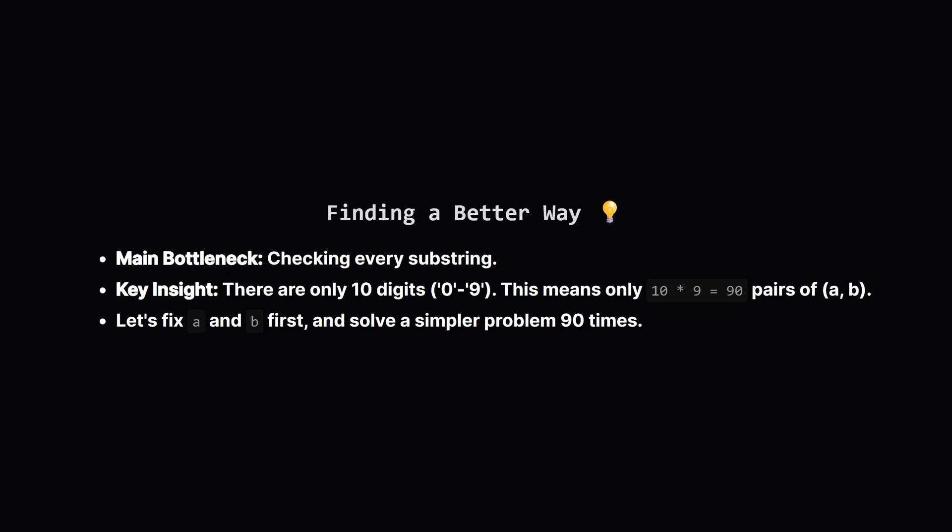The biggest reason our first idea was slow is because we were looking at every single substring. So, let's flip the problem around. What if, instead of starting with the substring, we start by picking our two characters, A and B. Since the string only contains digits from 0 to 9, there are only 10 possible characters. The number of pairs of distinct characters is just 10 times 9, which is 90. That's a small constant number. So, our new plan is this. We'll loop through all 90 pairs. For each pair, we'll solve a simpler problem. What's the best score for this specific A and B? If we can solve that simpler problem efficiently, we can just do it 90 times and take the best result.